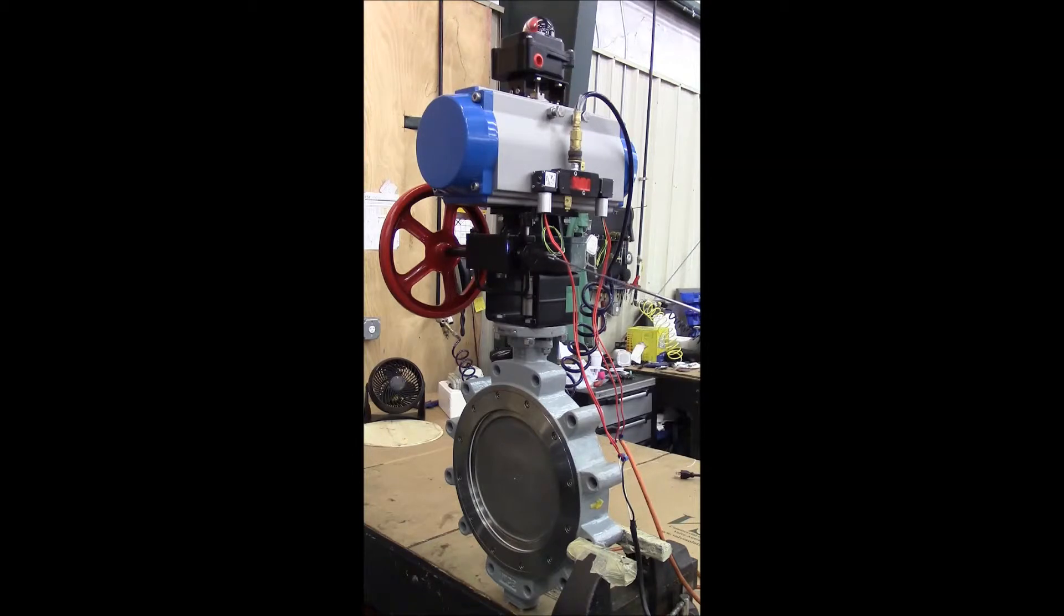It also comes equipped with a manual gear operator override with a clutch that you can manually operate the valve in the case that you have no air pressure and you need to rotate the valve.